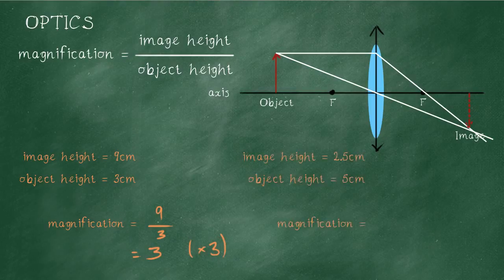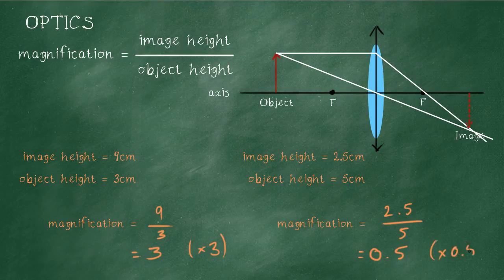Another situation: the image height is two point five, the object height is five. So the magnification is two point five divided by five, which is a half or zero point five. So the magnification is times zero point five. That means, of course, that the image is getting smaller, so it's diminished. We still call it a magnification of zero point five.